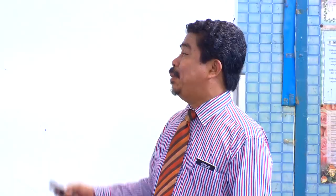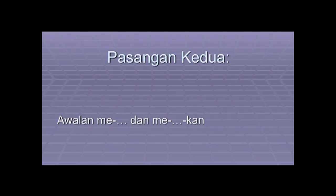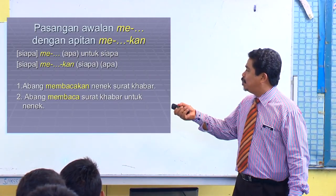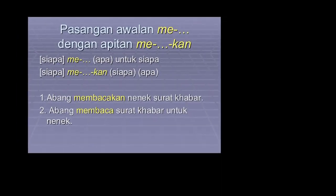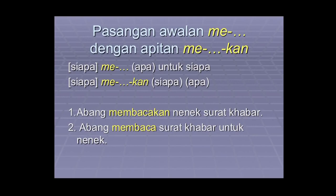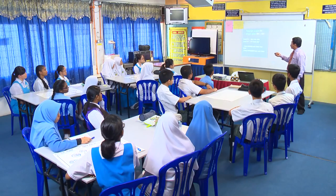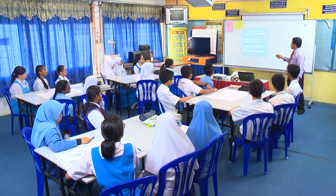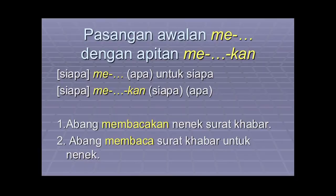Rumus kedua bagi pasangan me dengan me-kan: siapa me apa untuk siapa, dan siapa me-kan siapa apa. Contoh: Abang membaca surat khabar untuk nenek. Surat khabar itu apa, untuk siapa - untuk nenek. Abang membacakan nenek surat khabar - membacakan siapa, apa surat khabar. Senang.